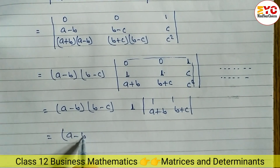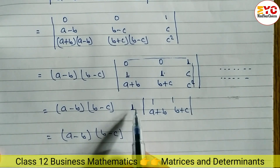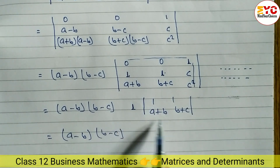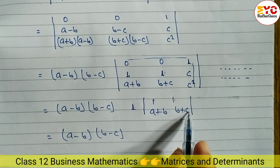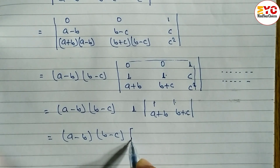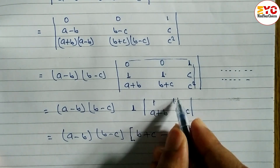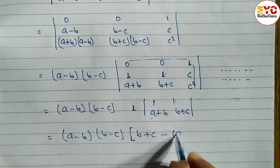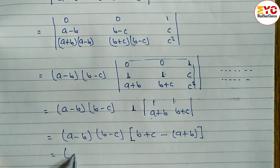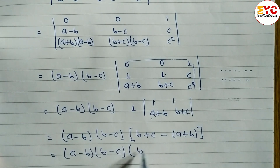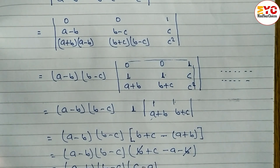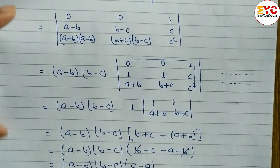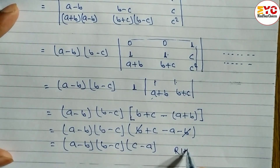So we have A minus B times B minus C times the 2x2 determinant of: 1, 1; A plus B, B plus C. Multiplying the main diagonal: 1 times (B plus C). Minus the non-diagonal: 1 times (A plus B). This gives B plus C minus A minus B. You can see B and B cancel, leaving C minus A. So the result is A minus B times B minus C times C minus A, which matches the RHS. Hence proved. LHS equals RHS.